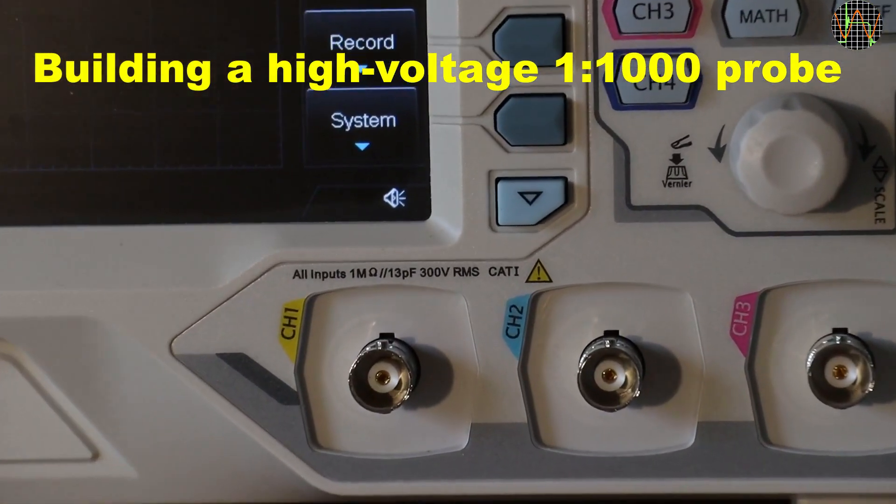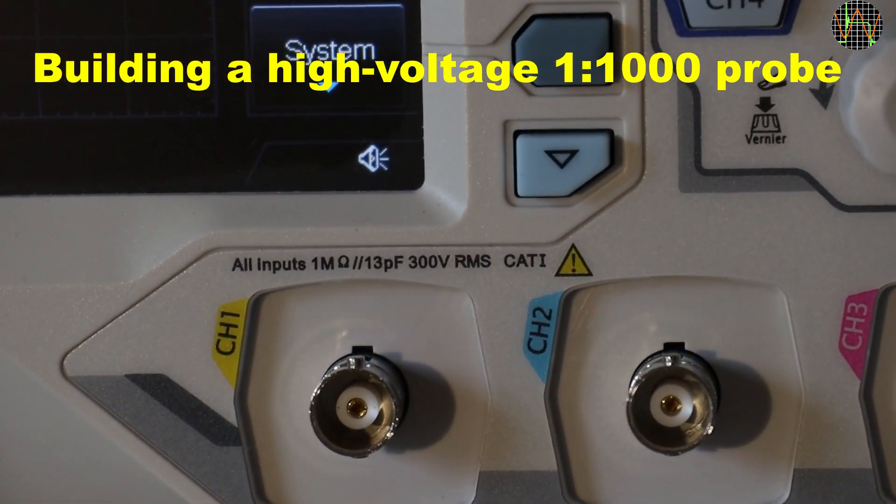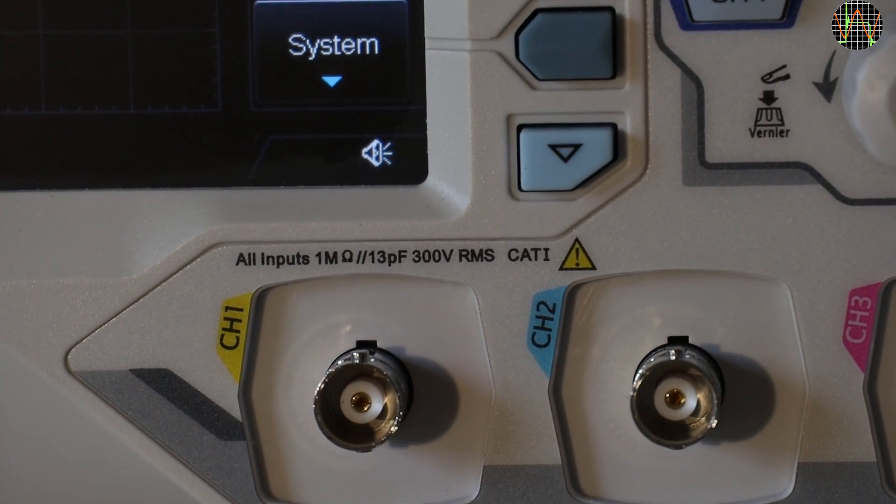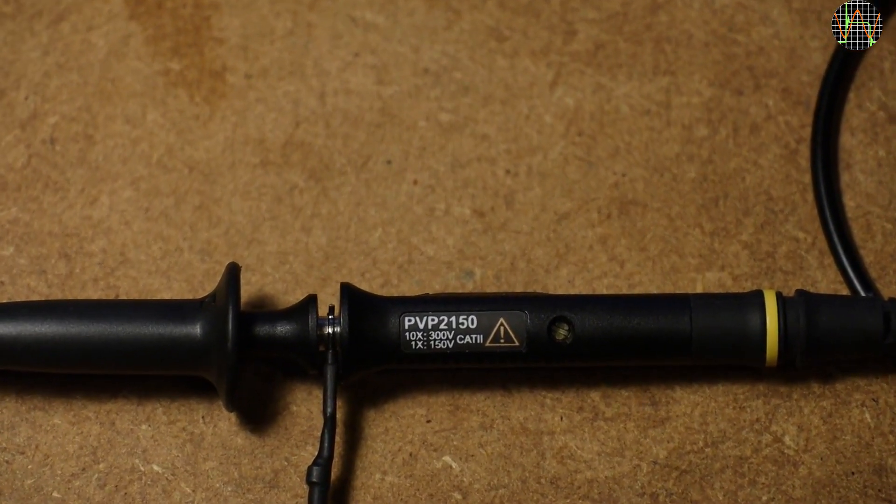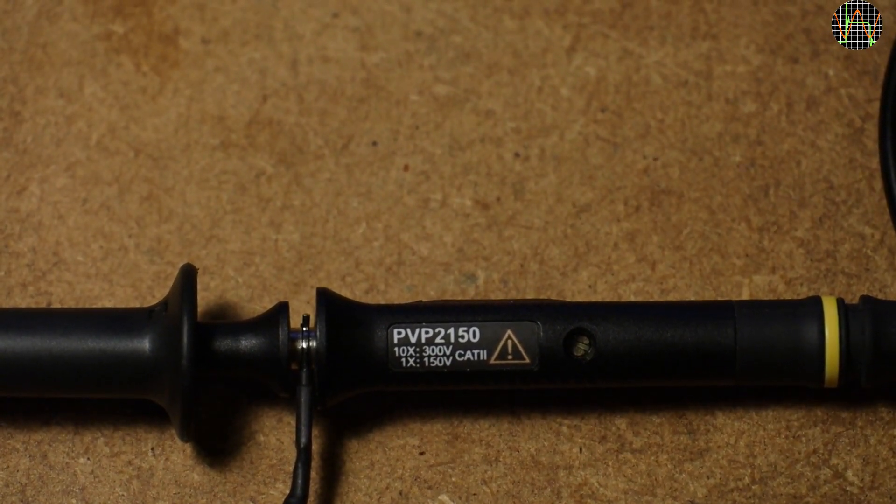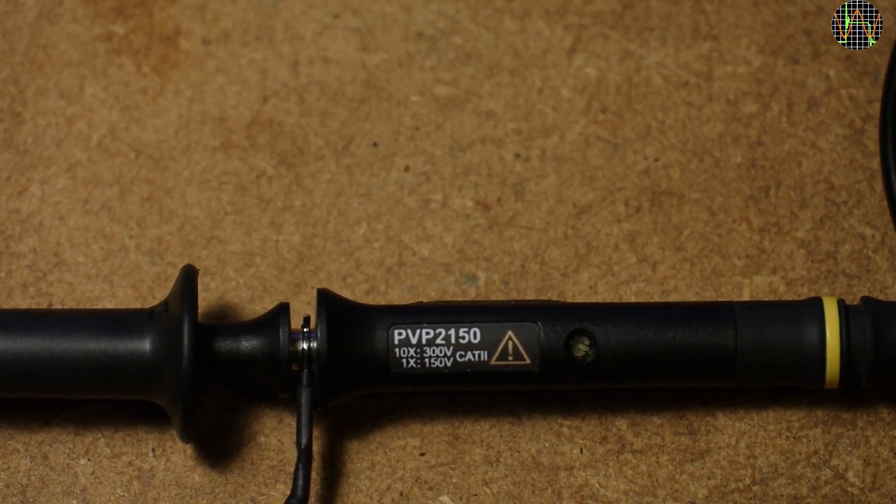Hi there. Occasionally I would like to examine some high amplitude signal on the scope but worry that it will overload the inputs. Using ordinary scope probes like these does not help, as it is still only 300V even when in divide by 10 mode.